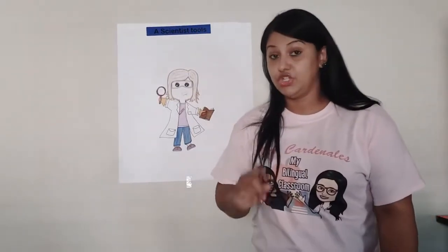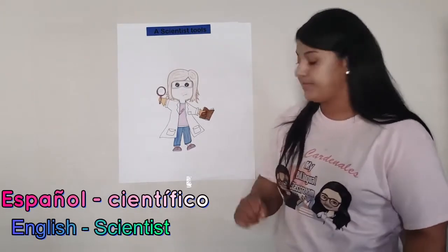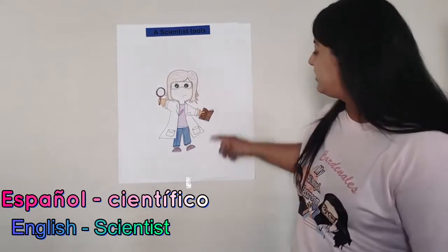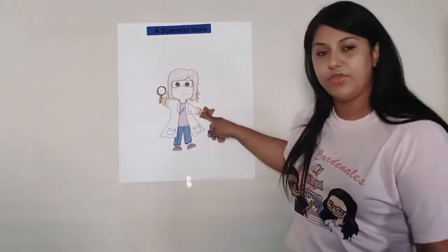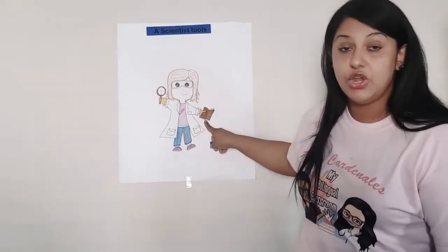We're going to go ahead and place this right at the top. What is the next thing that you see in that picture? In this drawing, what do we see? If you're guessing, what is this brown thing that she has in her hand?